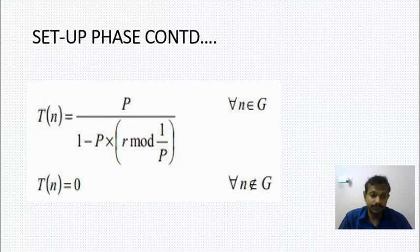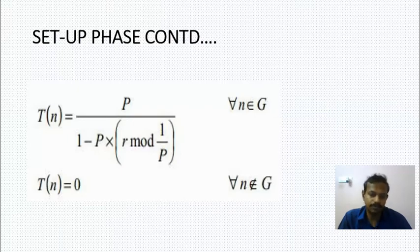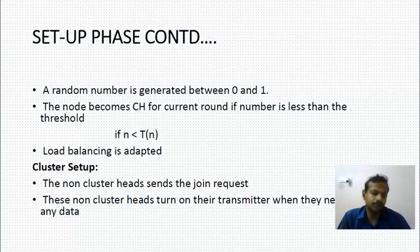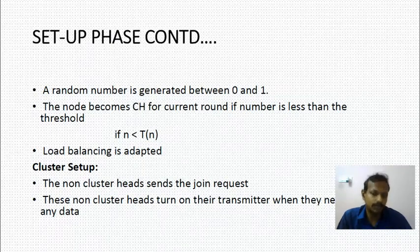The threshold T(n) is given by: T(n) = P / (1 − P × (r mod 1/P)), where r refers to the current round and P refers to the probability of becoming a cluster head. A random number is generated between 0 and 1 for each member, and if that number is less than the threshold, that member becomes a cluster head.